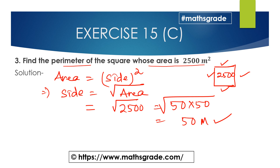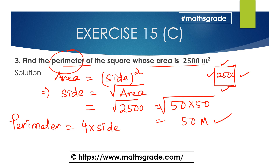Now we have to find the perimeter of the square. The perimeter of the square formula is 4 multiplied by side. The side is 50 meter, so 4 multiplied by 50 is 200. Therefore, the perimeter of the square is 200 meter.